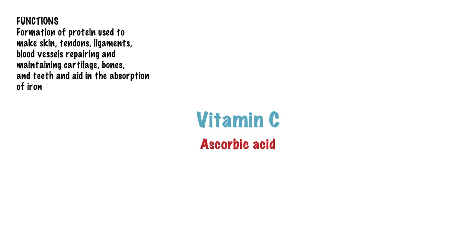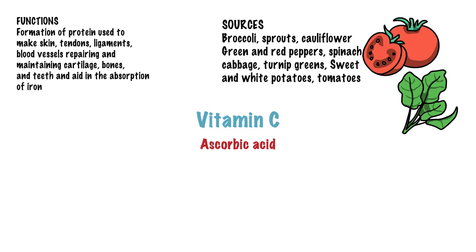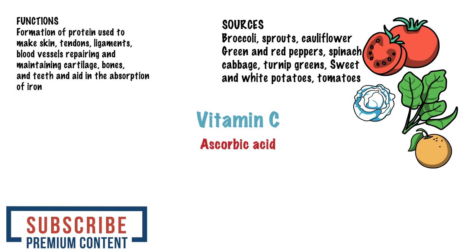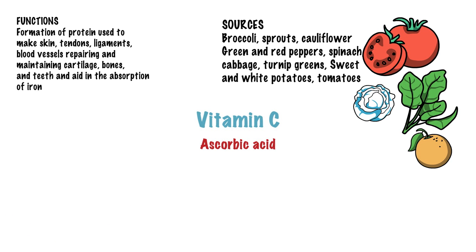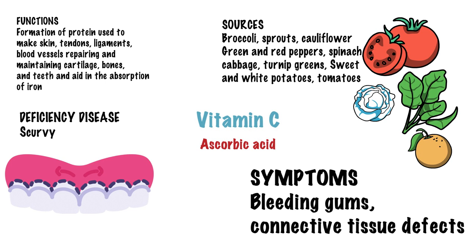Vitamin C is not to be avoided. Coming to the sources, broccoli and cauliflower have high quantities of this vitamin. Then we have green and red peppers, spinach, cabbage, turnip greens and other leafy greens, sweet and white potatoes, tomatoes and tomato juice. Everything citrus has Vitamin C. Scurvy is the disease one gets if deficient in this vitamin. Symptoms of scurvy include bleeding gums and connective tissue defects, which lead to a condition where wounds take much longer time to heal.